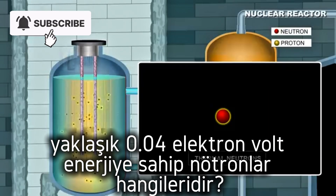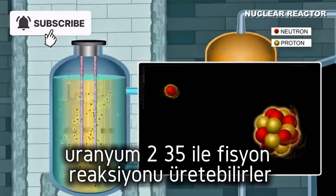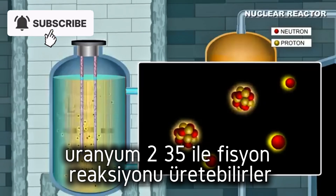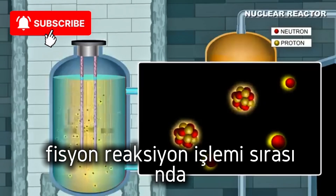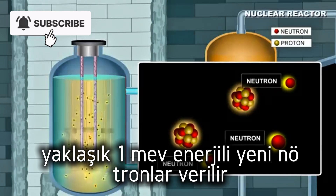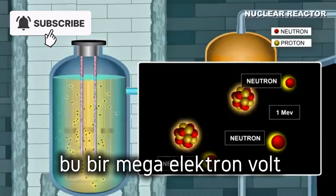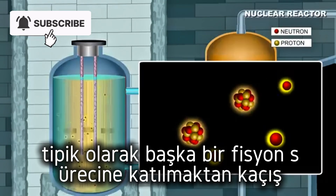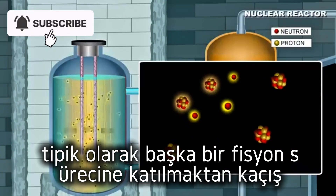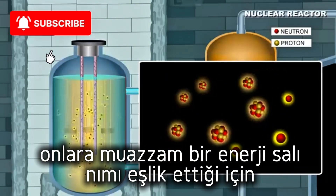Thermal neutrons, which are neutrons with energy of about 0.04 electron volts, are capable of producing a fission reaction with uranium-235. During the fission reaction process, new neutrons are given out which have energies of about 1 MeV — that is, 1 mega electron volt. These neutrons typically escape from participating in another fission process, as they are accompanied by enormous energy release.